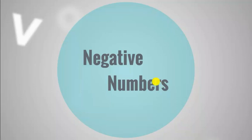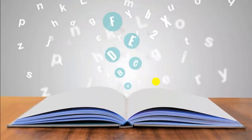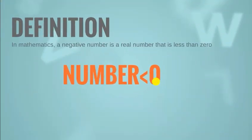What are negative numbers? Anything less than 0 is negative. In mathematics, a negative number is a real number that is less than 0. Here you can see that anything that is less than 0 is a negative number.